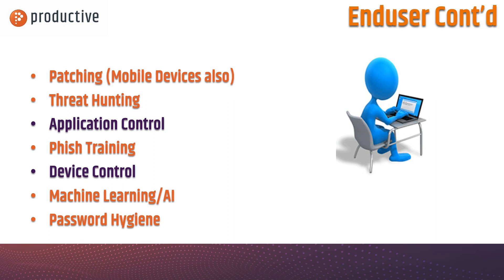Phishing training — we already talked about that. Machine learning and artificial intelligence, looking for things that are not known but look suspicious, are becoming more and more critical in today's threat environment. And password hygiene — super important. Let's not use the same password for any two applications. That way if a credential does get stolen, it can't be used on any other systems. This is tough for end users because they want it to be easy, but password management can put folks into a situation where they're using really lengthy, complex passwords that are impossible to guess — a different, unique one for every single login.